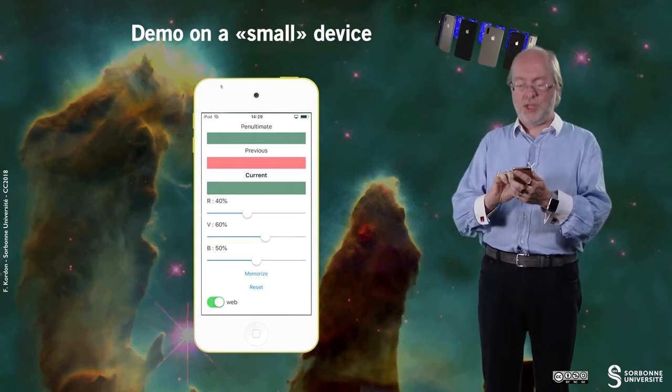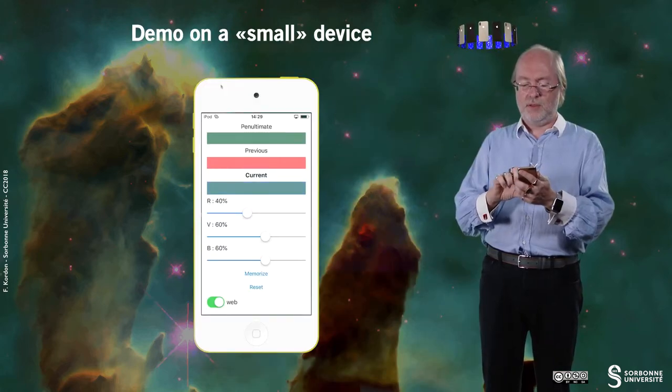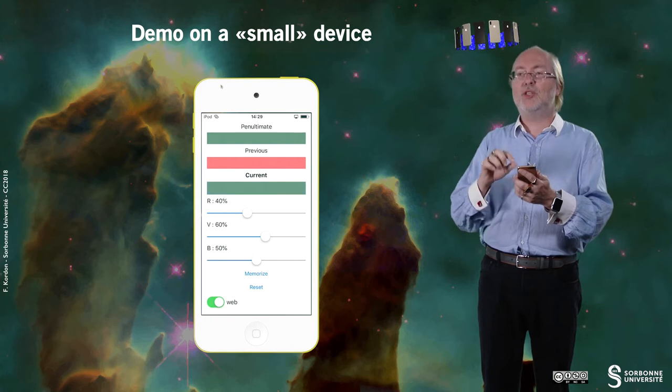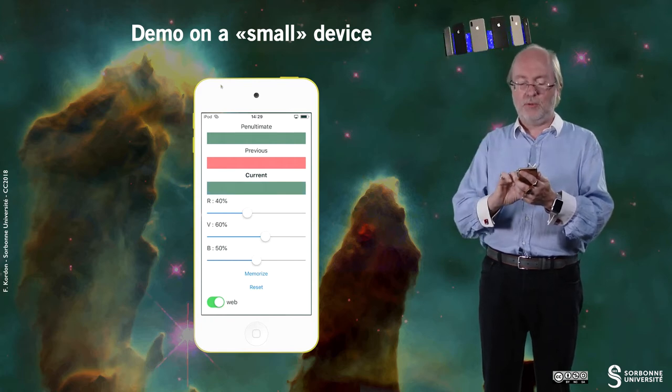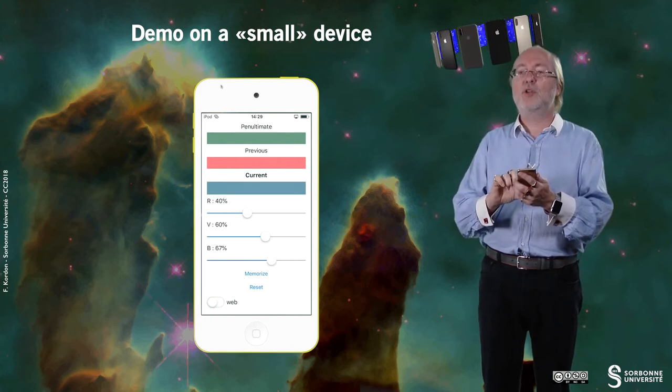I also have a switch here for web, and the difference is when I'm activating the web switch, it means that I just go 10% by 10%, while if I disable it, I'm much more precise.